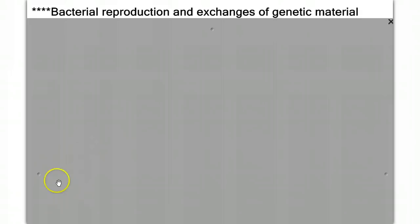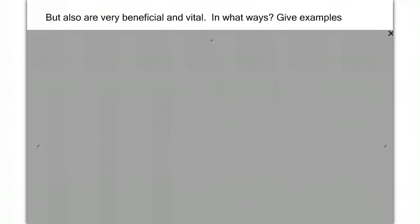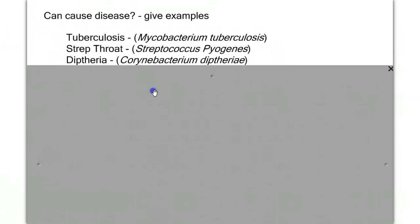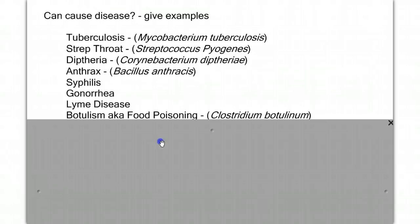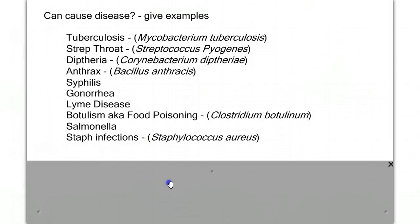For the last part of this first video, I want to talk about bacteria's role in disease and also the beneficial and positive sides of bacteria. Can bacteria cause disease? Of course they can — tuberculosis, strep throat, diphtheria, anthrax, syphilis, gonorrhea, Lyme's disease, botulism, salmonella poisoning, staph infections. This is just a few of the different types of illnesses caused by these bacterial pathogens.